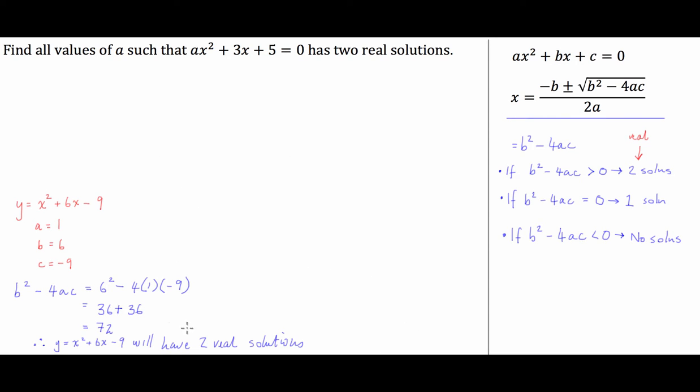Okay, so that's an incredibly basic application of the discriminant, but if you're just starting out or doing a pre-calculus course, you'll be asked to do questions like this in tests. Let's go to a little bit more nuanced question. Find all values of a such that ax squared plus 3x plus 5 equals 0 has two real solutions. So what we're going to do first is break the question down and figure out what it's actually asking us. We have an equation that has to have two real solutions, so that means b squared minus 4ac has to be greater than 0.